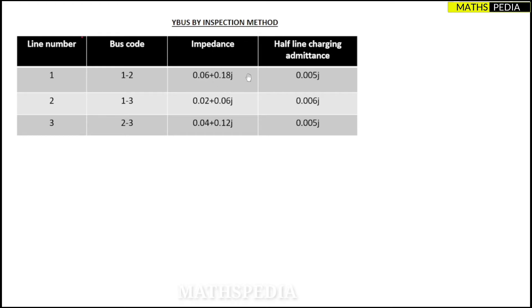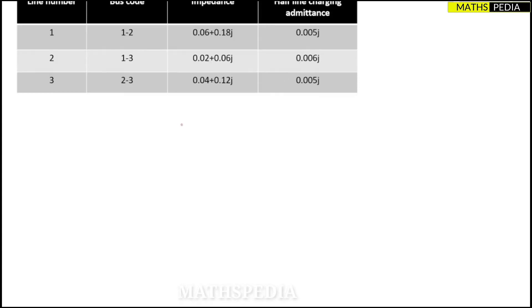Half-line charging admittance is given directly. The first step, whenever the data is in tabular form, is to draw the network diagram. We'll understand how to write each element in the Y-bus matrix through the diagram.